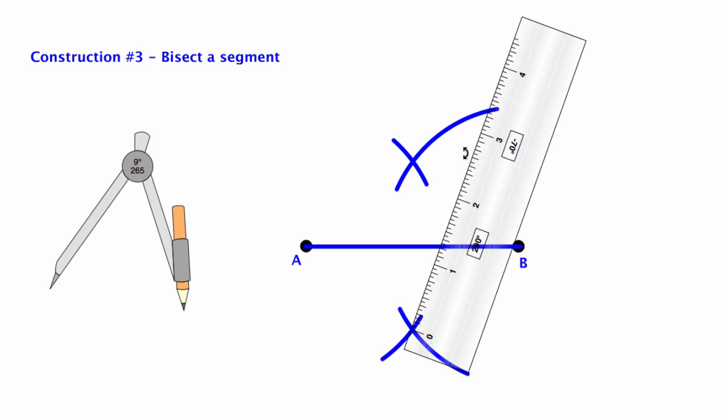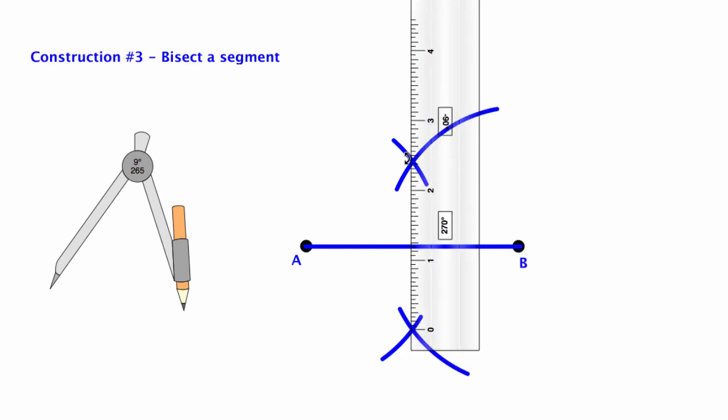Bisecting a segment means to cut it into two equal pieces, so I'm splitting segment AB into half.